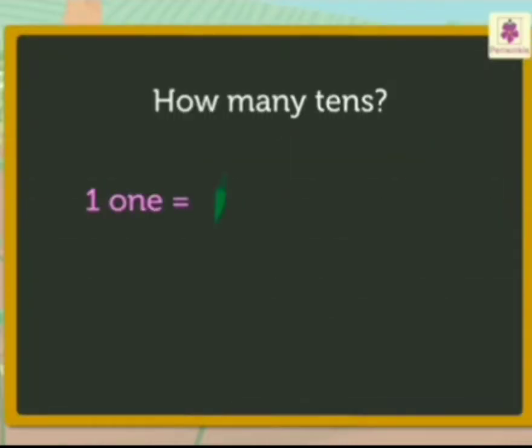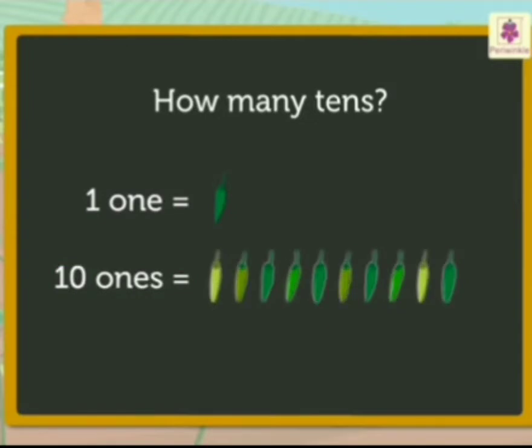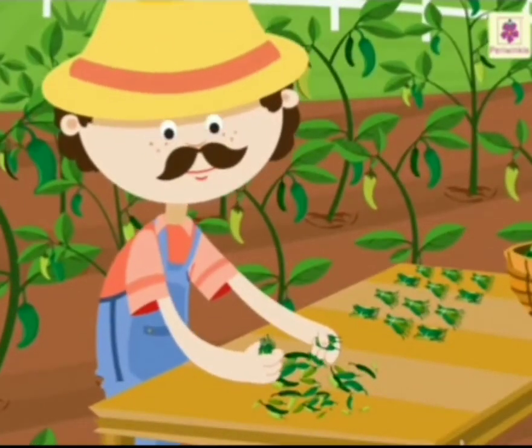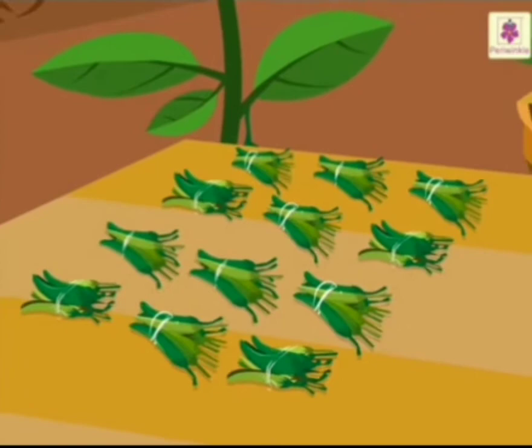How many tens? This is one chili in front of you, and ten ones means ten chilies. When you make a bundle of ten chilies, it becomes one ten. See, this man is making bundles of chilies.